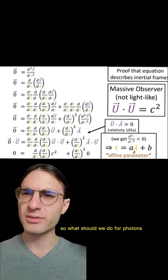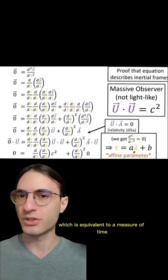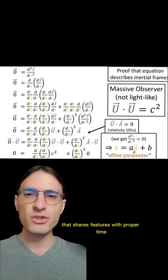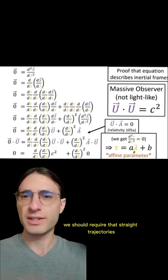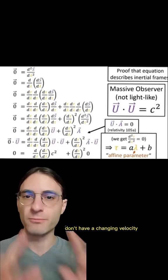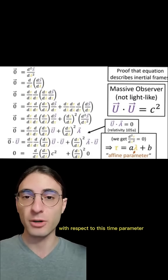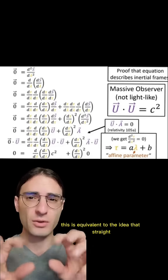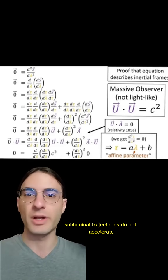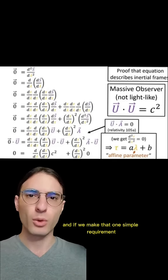So what should we do for photons? Well, we should choose a parametrization, which is equivalent to a measure of time, that shares features with proper time. For example, we should require that straight trajectories don't have a changing velocity with respect to this time parameter. This is equivalent to the idea that straight subluminal trajectories do not accelerate. And if we make that one simple requirement, we land on a particular choice of clock,